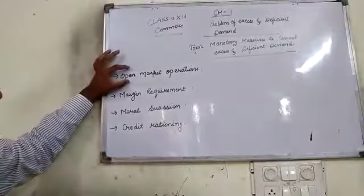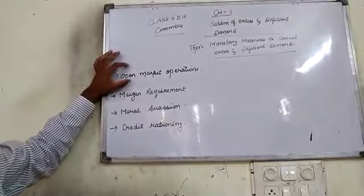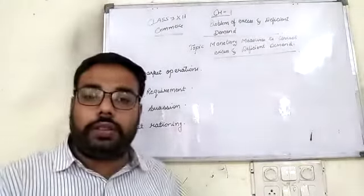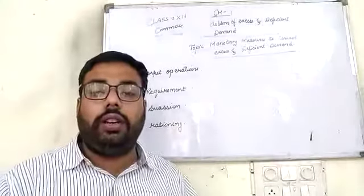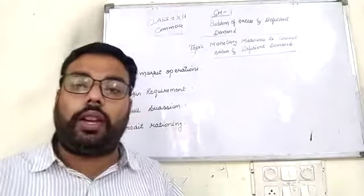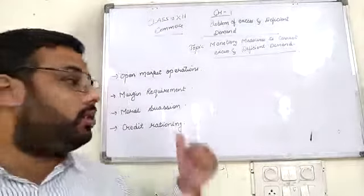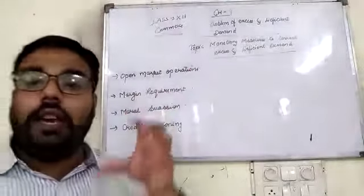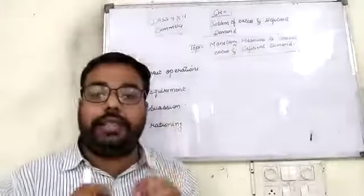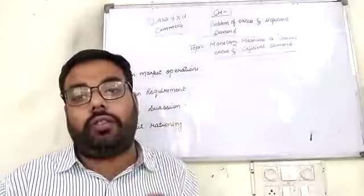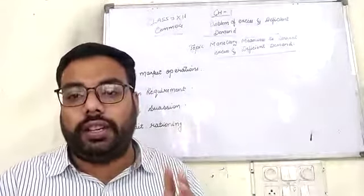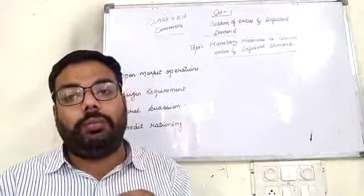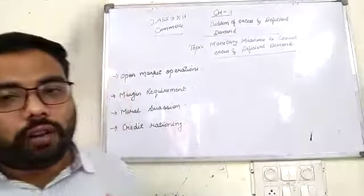The first topic is Open Market Operations. Open Market Operations is the process of buying and selling the government securities by the RBI on behalf of the government.